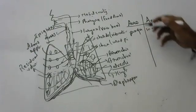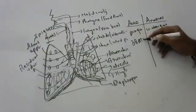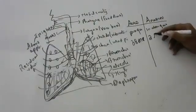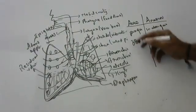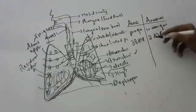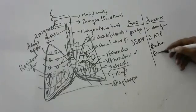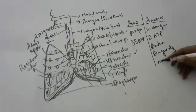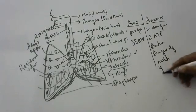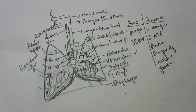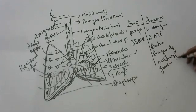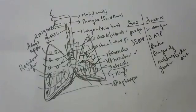Most cells on earth are aerobic. Only a few cells are anaerobic, like bacteria and blue-green algae. Our muscle cells sometimes undergo anaerobic respiration — not always, but when you do a lot of exercise and sufficient oxygen is not coming, the muscles undergo anaerobic respiration and release lactic acid.